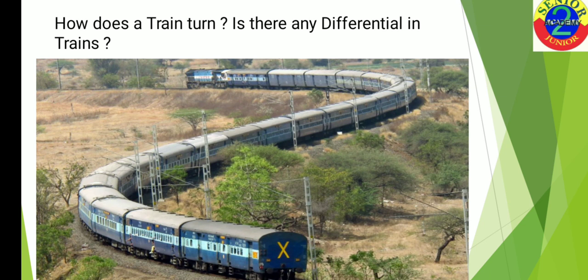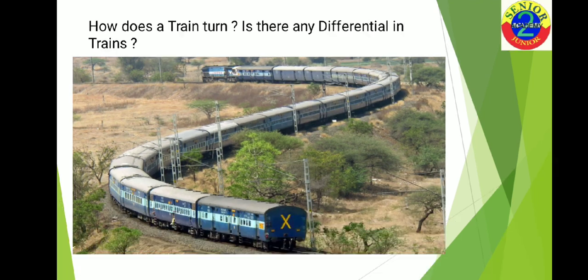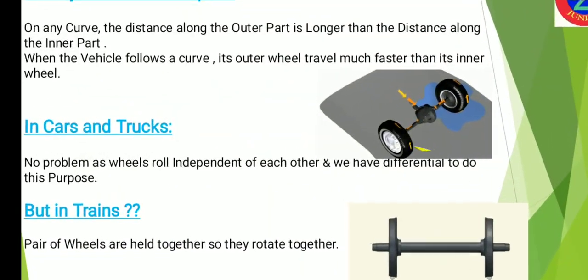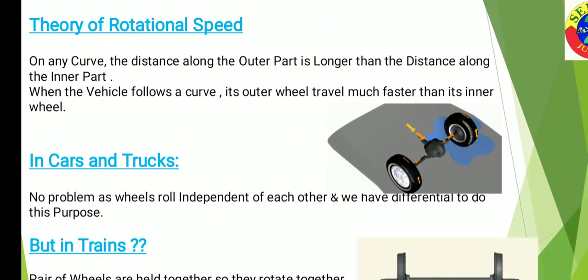The answer is there is no differential in trains. So if there is no differential, then how does a train take a turn? In order to understand this, you need to understand the theory of rotational speed. Whenever a vehicle travels in a straight path, the inside wheel and the outside wheel cover the same distance and travel at the same speed. But when a vehicle is taking a turn, the inside wheel has to travel a lesser distance compared to the outside wheel. So the outside wheel rotates at a much higher RPM compared to the inside wheel, and in regular vehicles this is done by the differential.